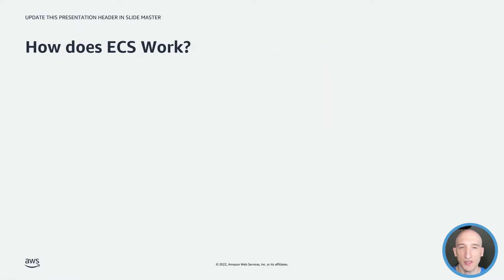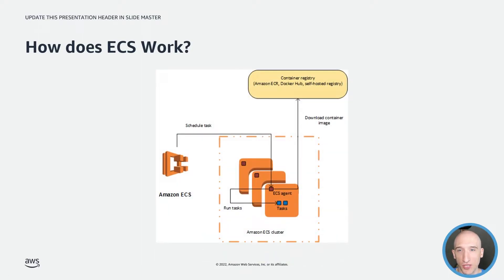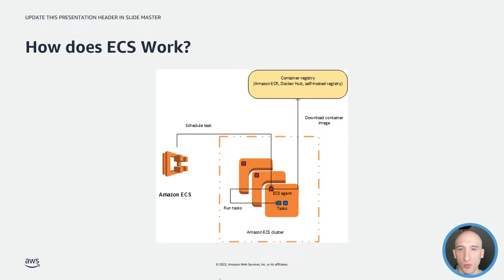So how does ECS actually work? Amazon ECS is a cluster of EC2 instances. When a task is instantiated, your task definition — which defines all the containers that form your application — is triggered. All required container images are pulled from a container registry, whether that be ECR, Docker Hub, or somewhere else. Those images are used to build containers, and the requested task is run. This is all managed by the container agent on the system, which is managed by ECS.